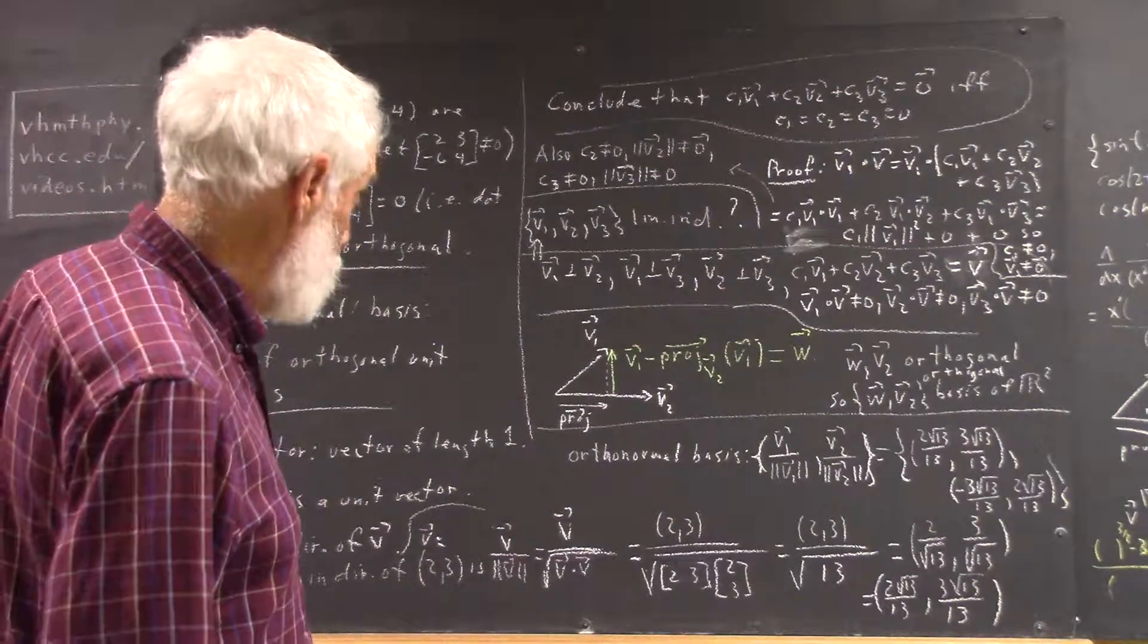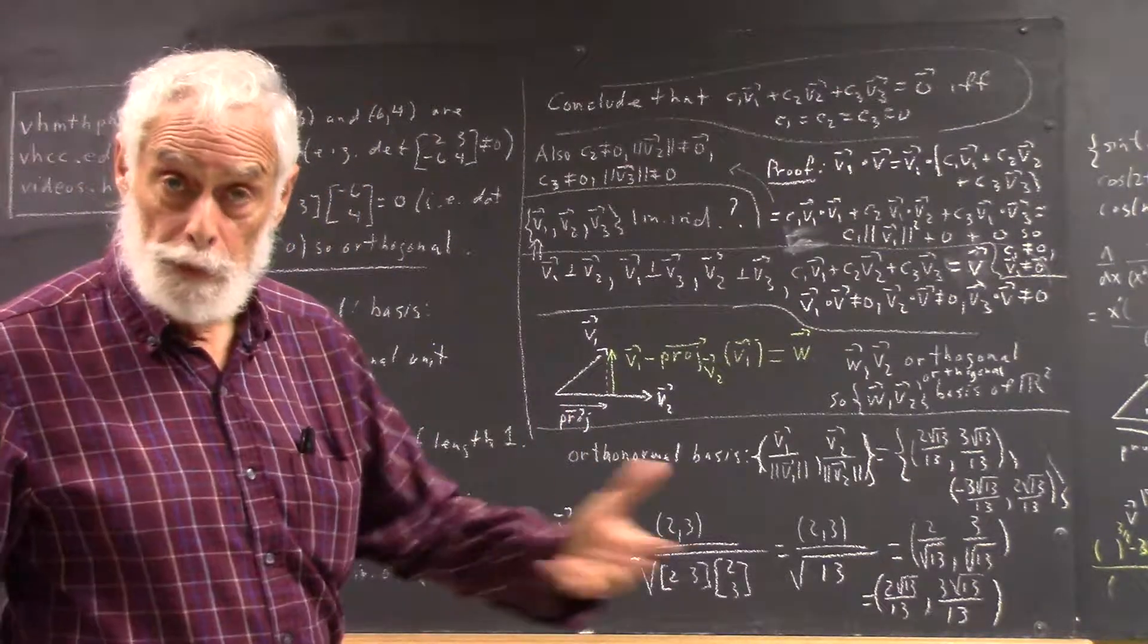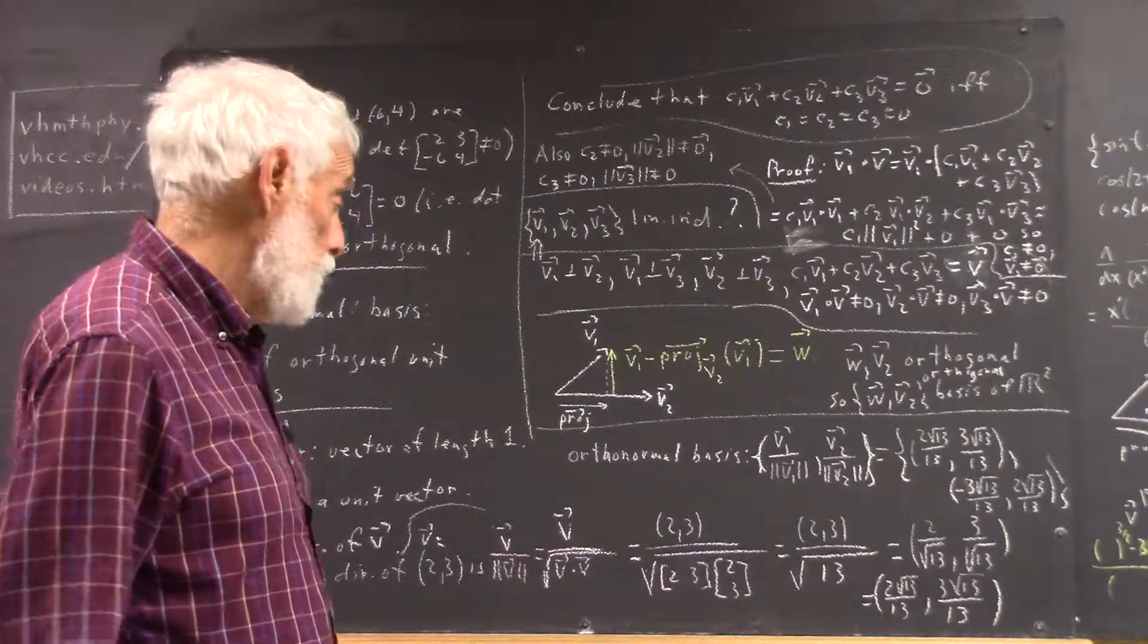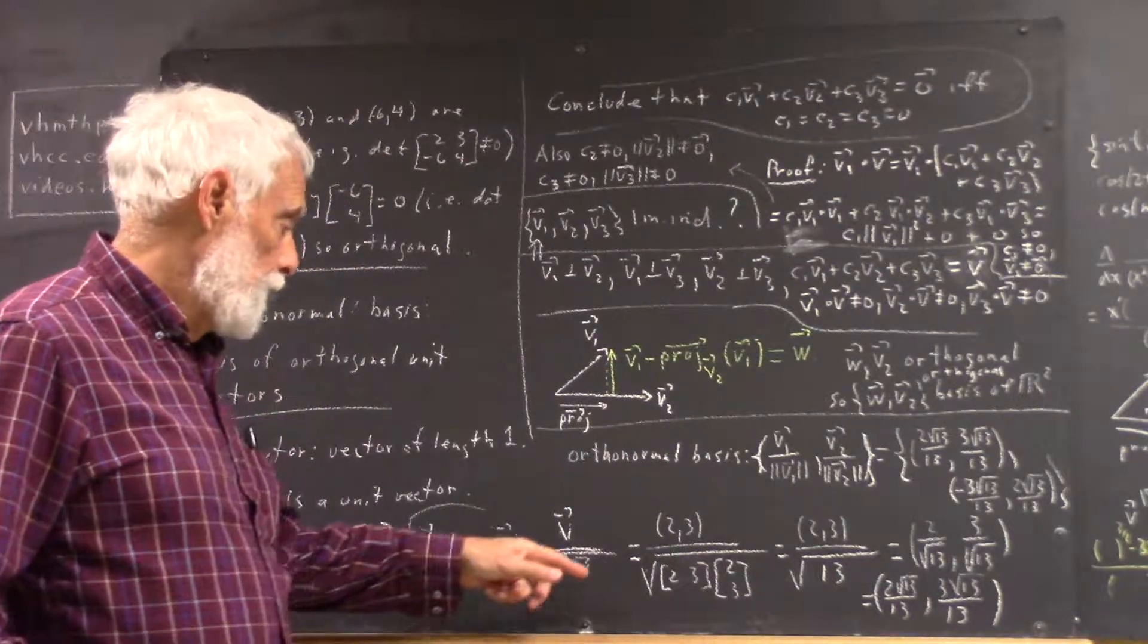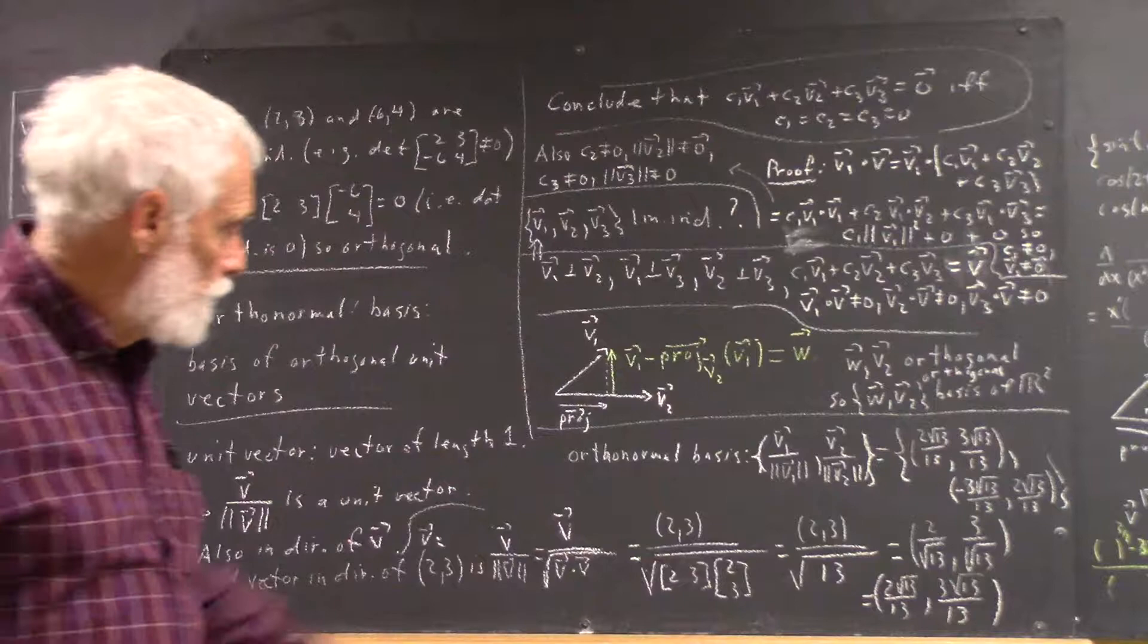And of course, in R2, it's also equal to what you get using the Pythagorean theorem. Identical results that you can easily check out. So, that's (2, 3).